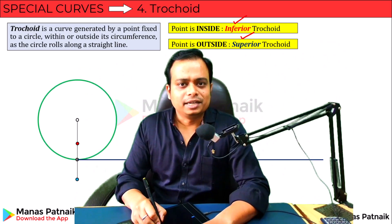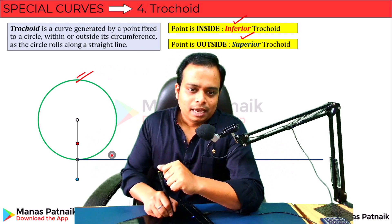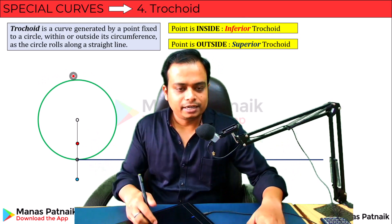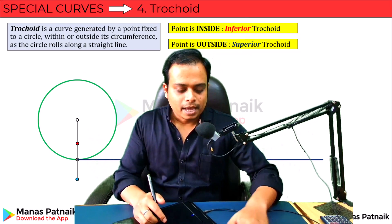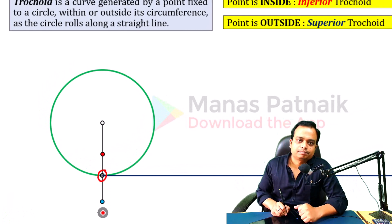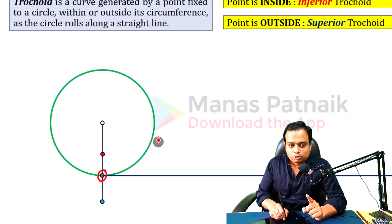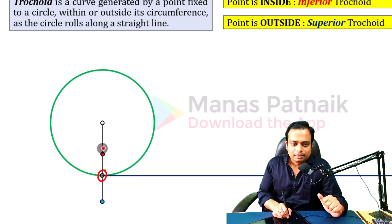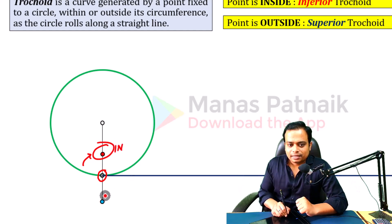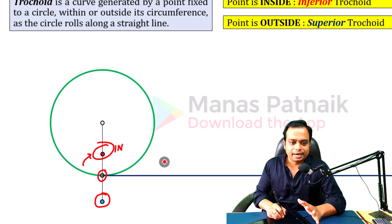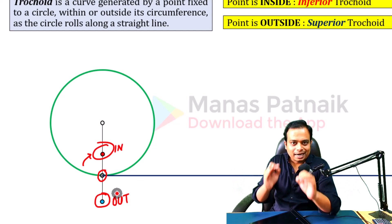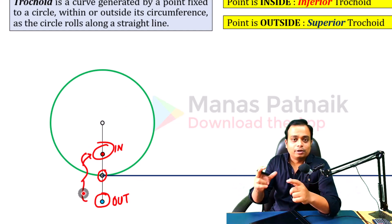Let's start with a simple arrangement. You've got a rolling circle and a straight path on which it's going to roll. Now, before we start rolling, there's something I need to explain. There is a black point placed on the circumference of the circle. There is a red point placed inside the circumference, and there is a blue point placed outside the circumference. You've got to track all three points simultaneously.